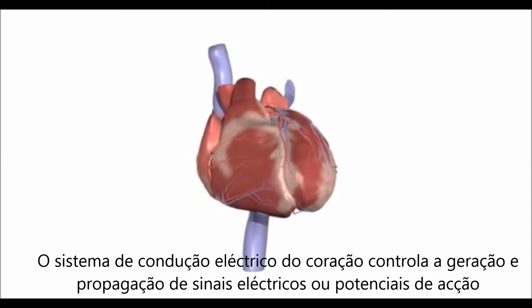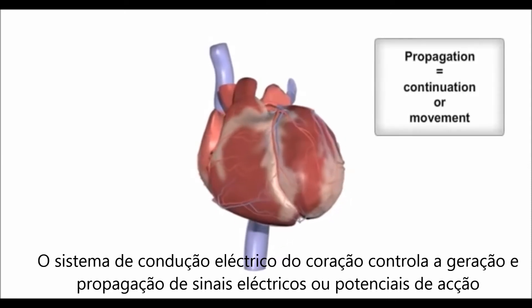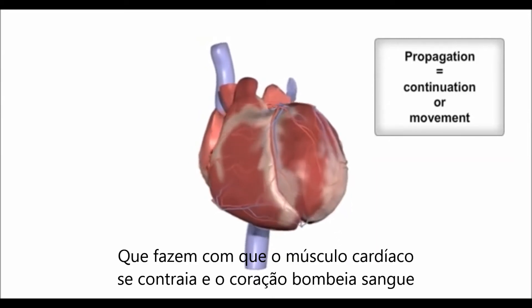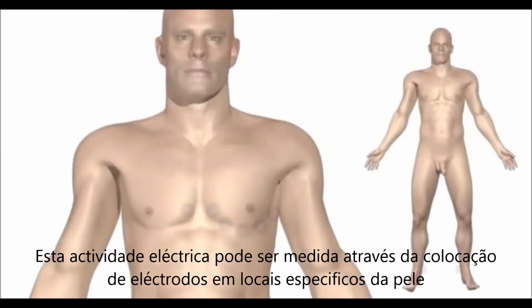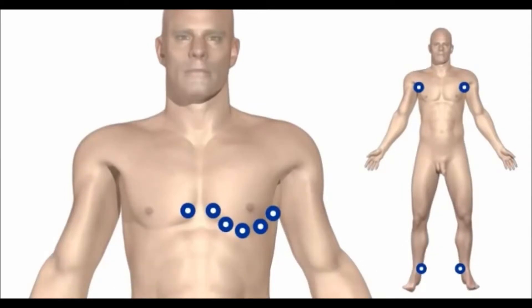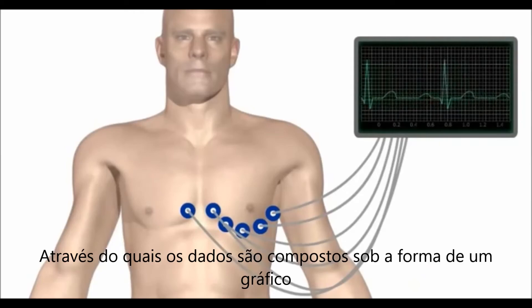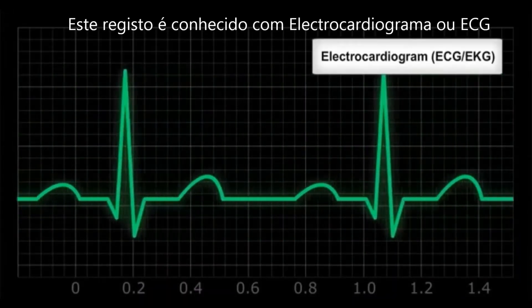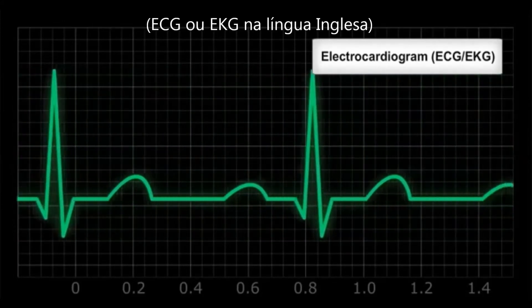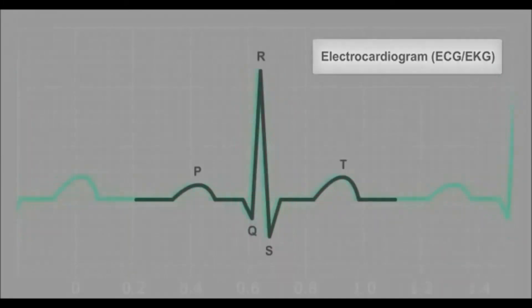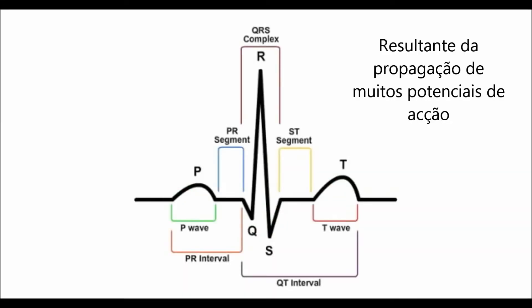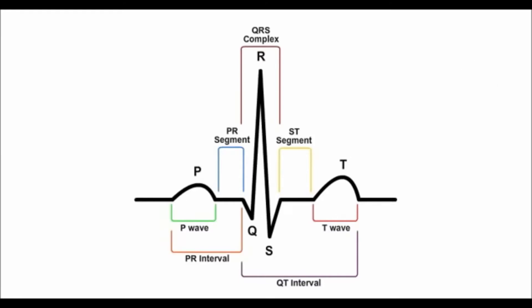The heart's conduction system controls the generation and propagation of electrical signals, or action potentials, that cause the heart's muscles to contract and the heart to pump blood. This electrical activity can be measured at electrodes placed at specific points on the skin, from which a composite recording is produced in the form of a graph. This recording is known as an electrocardiogram, or ECG, sometimes referred to as an EKG — a tracing of the overall electrical activity of the heart, resulting from the propagation of many action potentials.